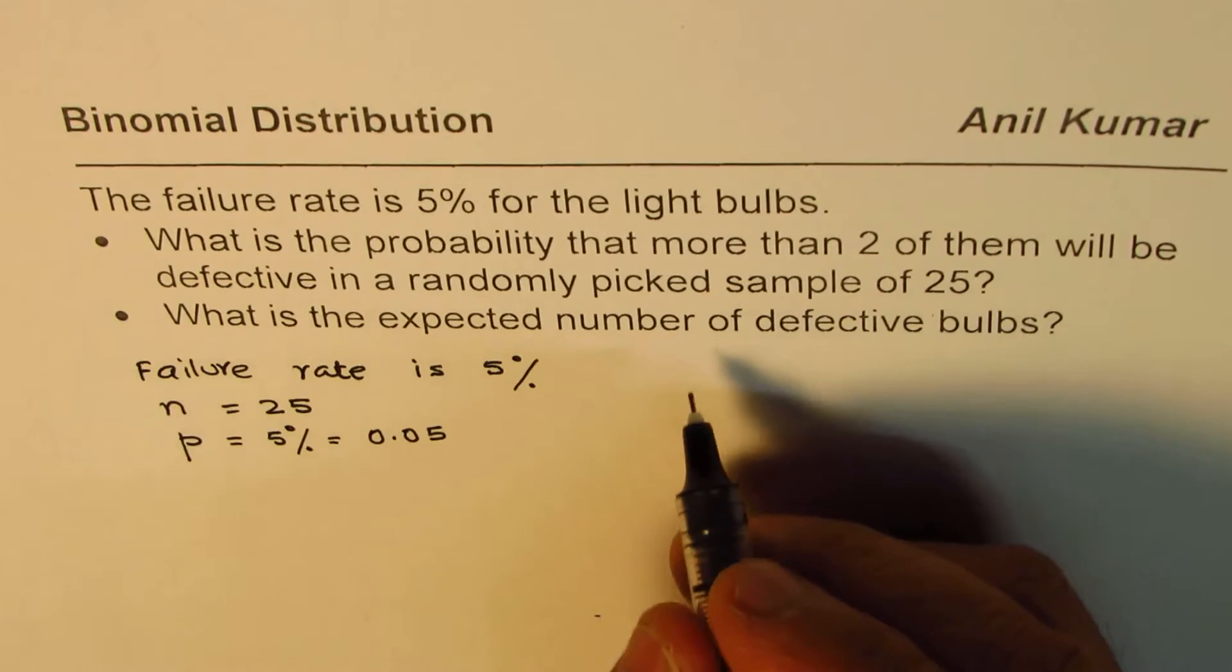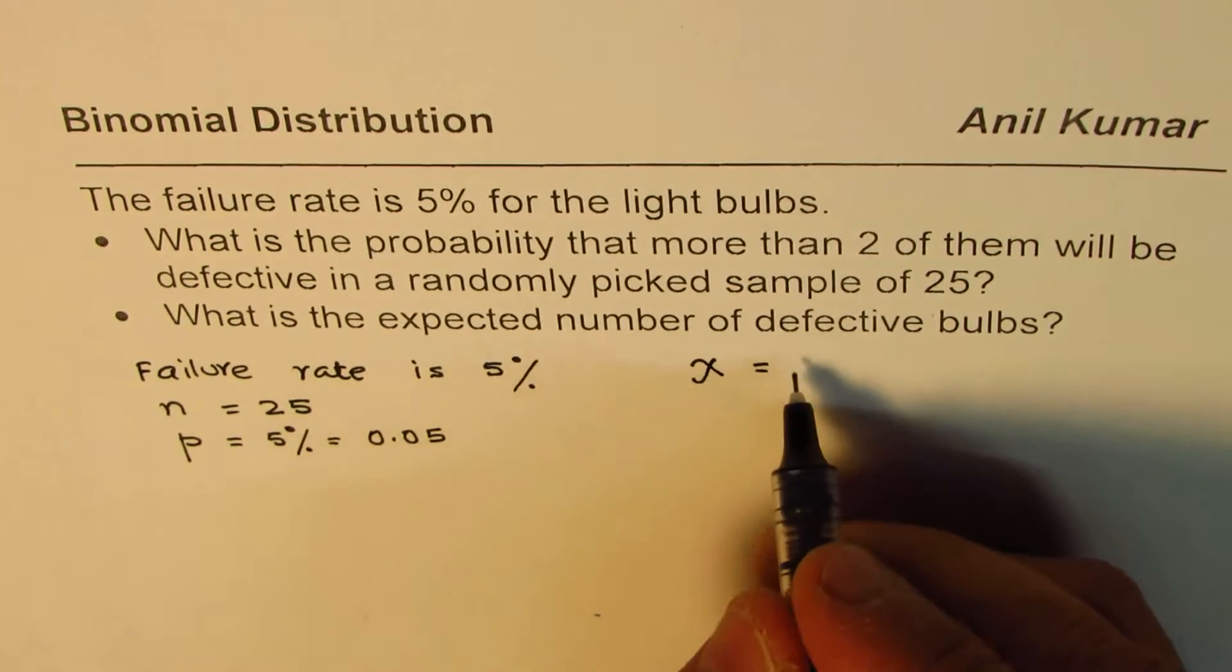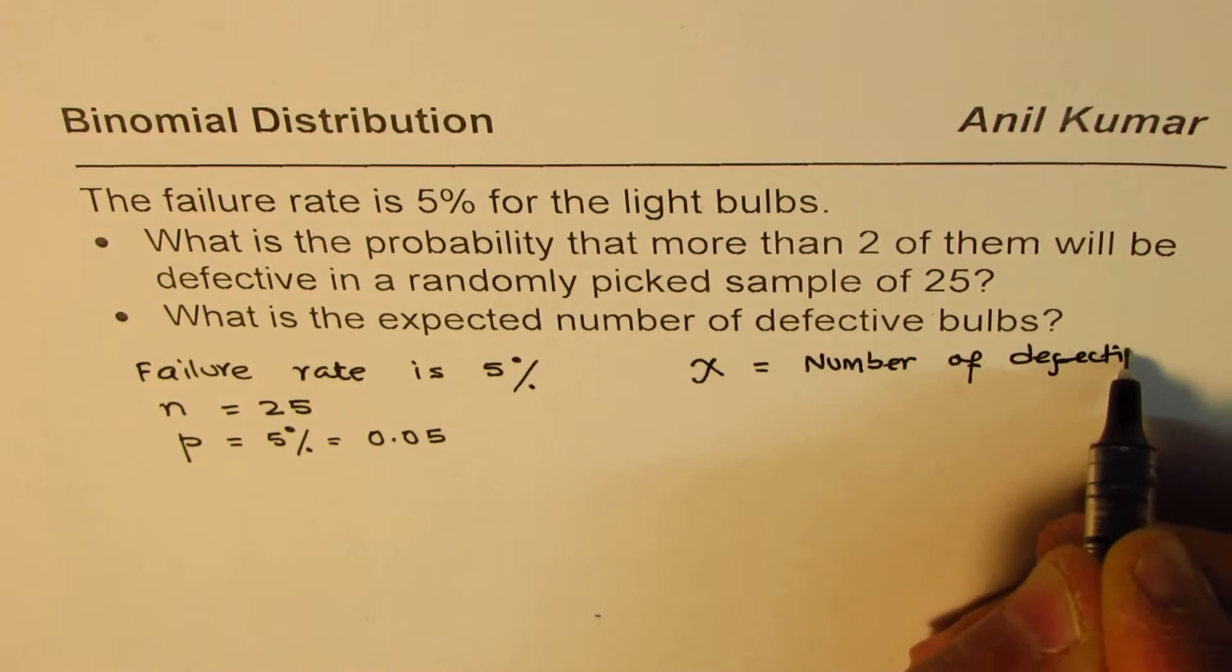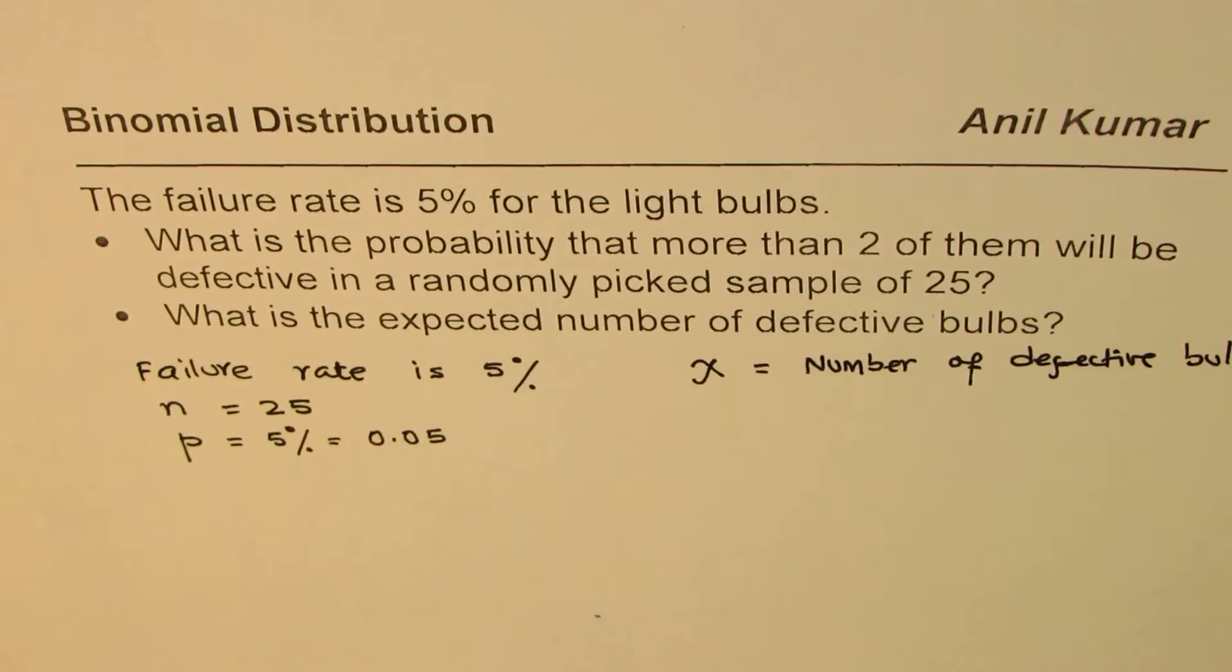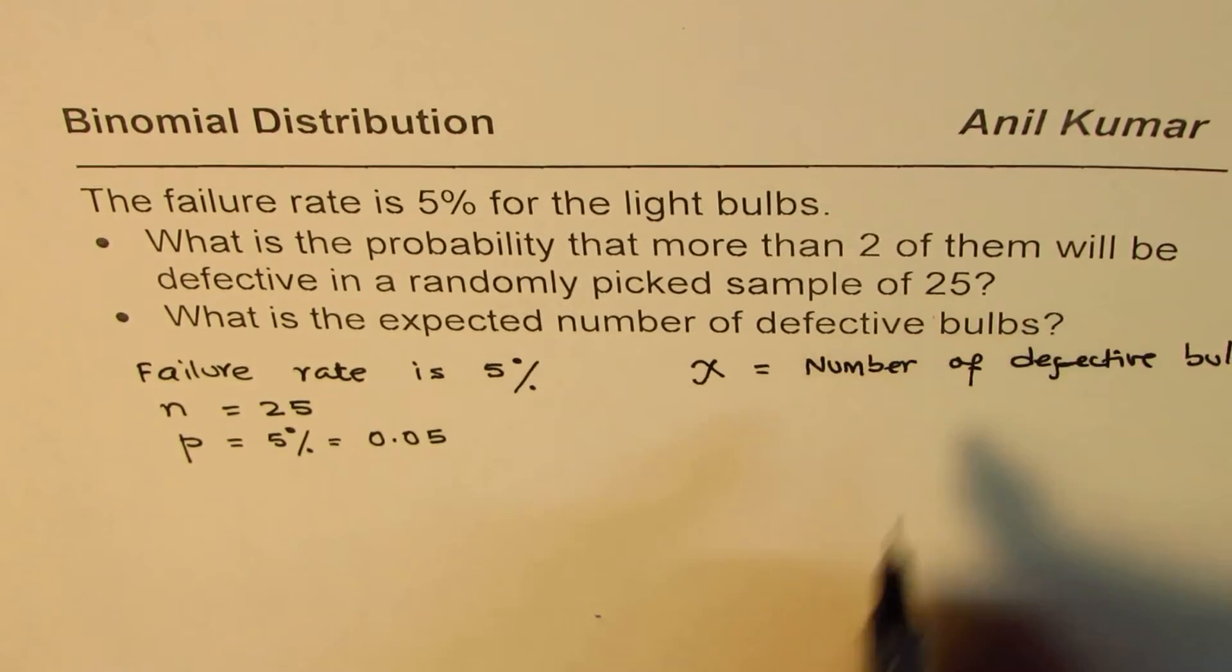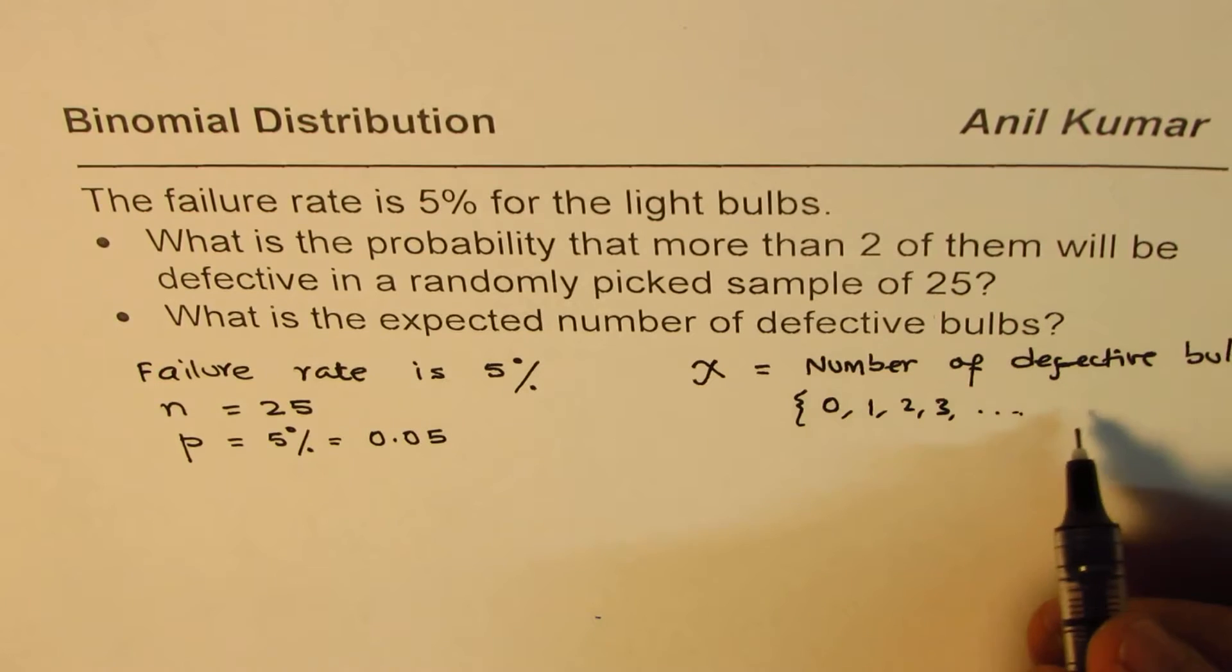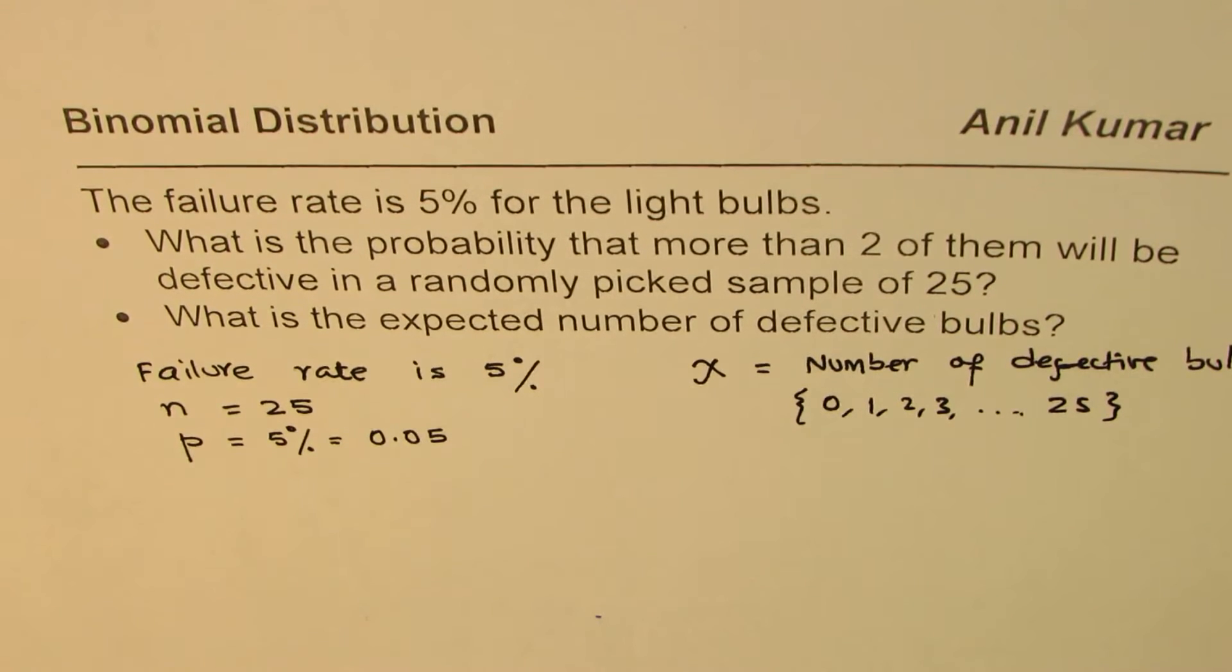defective bulbs. If you take a sample of 25, you could have 0 defective, 1 defective, 2 defective, 3 defective. The possible values could be 0, 1, 2, 3, up to 25. All could be defective. These are the possible values of X.